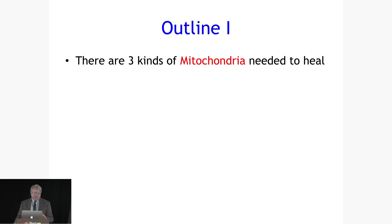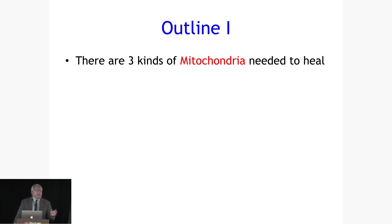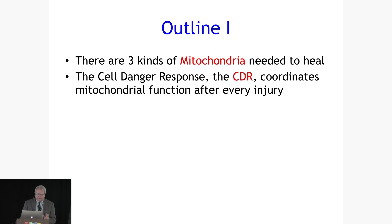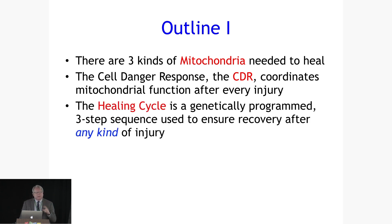The first thing I want to emphasize is that there are three kinds of mitochondria — three functional states of mitochondria that are necessary in order to instantiate healing. After any kind of perturbation that leads to cellular injury or stress, mitochondria are altered in a very specific way. The cell danger response coordinates mitochondrial function after every injury, and the healing cycle is a genetically programmed ontogenetic program — a three-step sequence that is highly evolved, shared by all multicellular life on the planet, and necessary to ensure recovery after any injury.